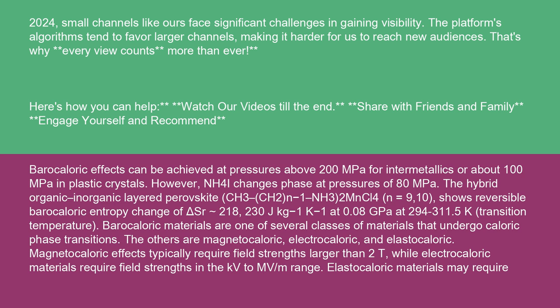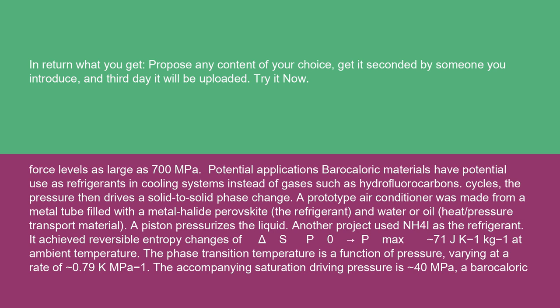Baricaloric materials are one of several classes of materials that undergo caloric phase transitions. The others are magnetocaloric, electrocaloric, and elastocaloric. Magnetocaloric effects typically require field strengths larger than 2T, while electrocaloric materials require field strengths in the kV to MV/m range. Elastocaloric materials may require force levels as large as 700 MPa.